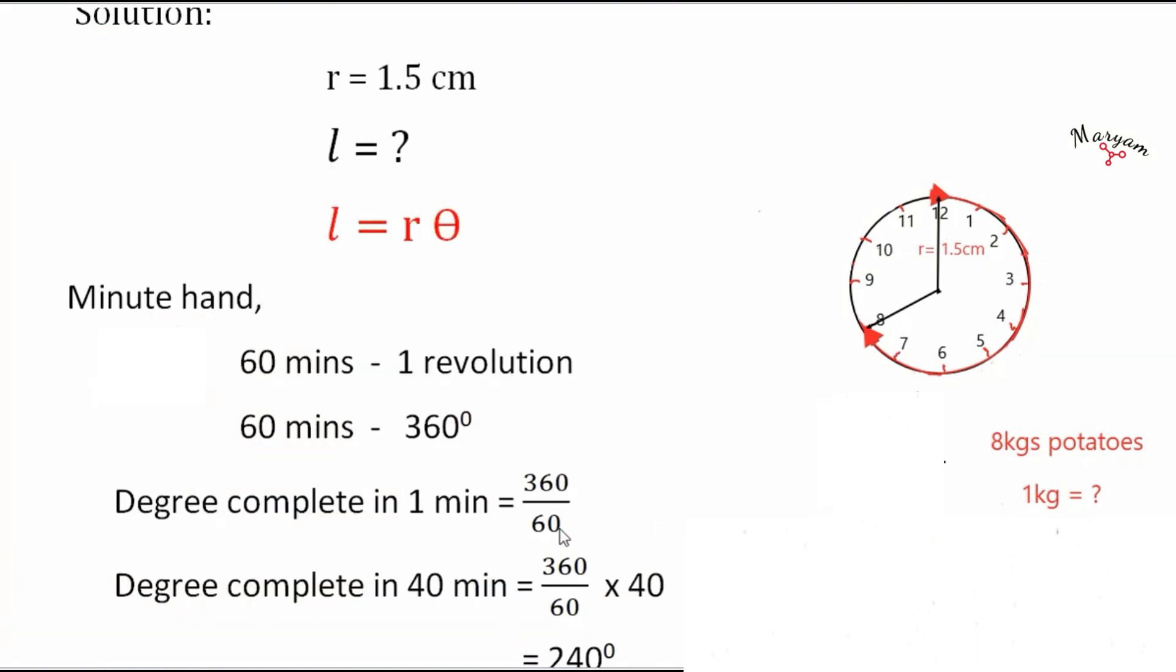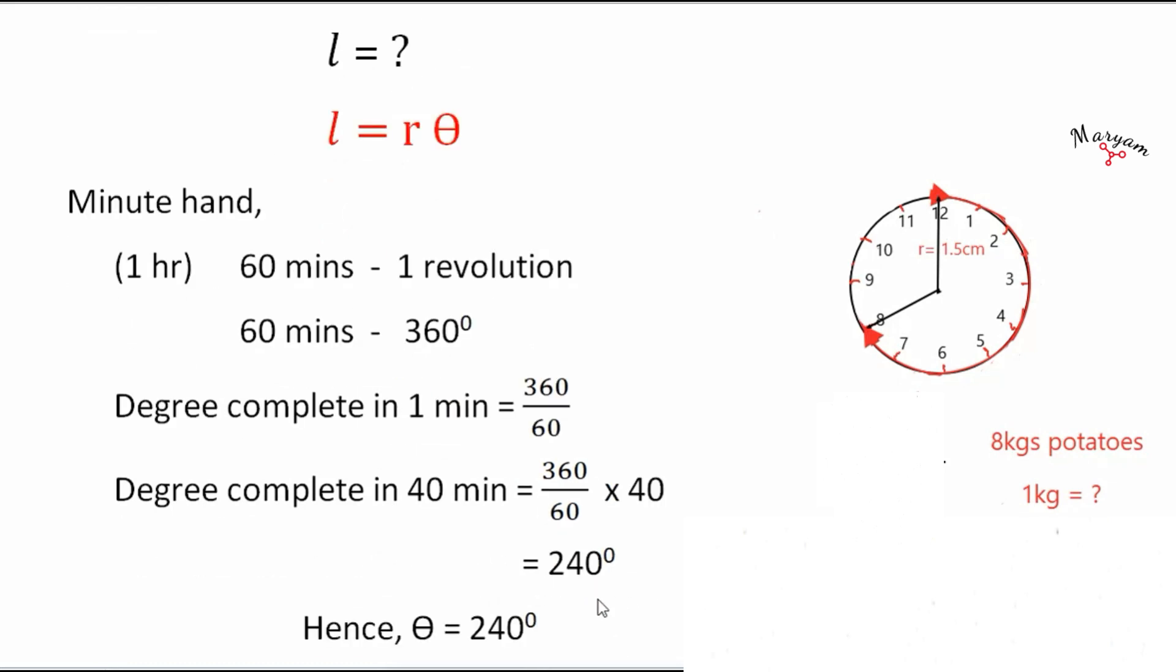So degrees complete in 40 minutes equals 360 by 60 into 40, that is 240 degrees. Hence theta equals 240 degrees.